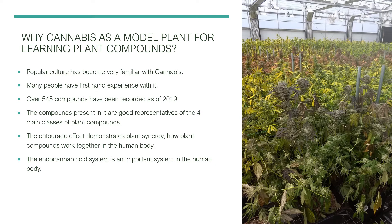Cannabis is a model plant for learning plant compounds. Many people are very familiar with cannabis and have firsthand experience with it. When we talk about the entourage effect — different compounds affecting the body differently — people know what that's about. There are also over 545 compounds recorded from cannabis as of 2019, and the compounds present in it are good representatives of the four main classes of plant compounds we're going to study today.